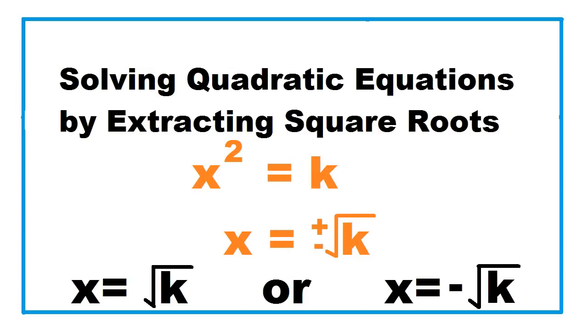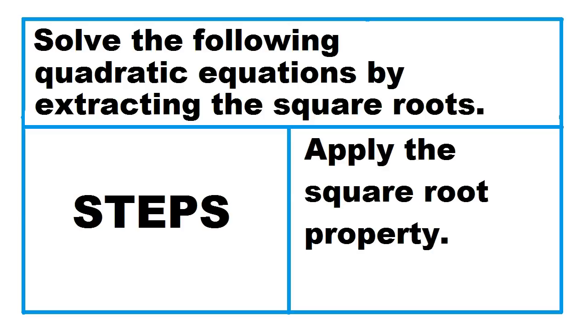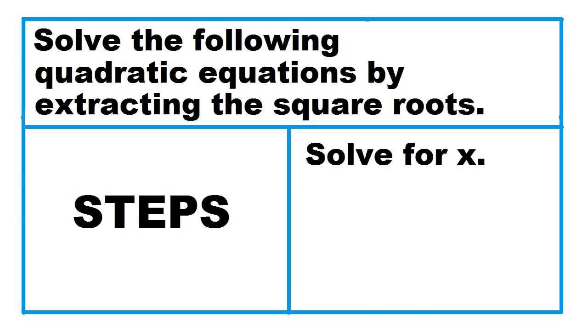Solving quadratic equations by extracting square root. First, write the equation in the form x squared equals k. Second, apply the square root property. Third, solve for x.